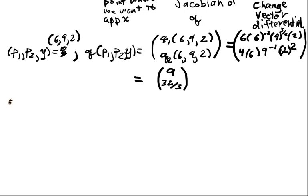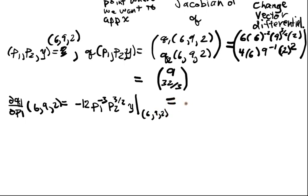Let's start with DQ1/DP1 of 6, 9, 2. When we differentiate with respect to P1, we'll have -12P1^(-3) P2^(3/2) Y, and we want to evaluate at the point 6, 9, 2. When we evaluate that, we're going to get -12 times ultimately 27. Lots of nasty numbers in here. 36 times 6 times 2, which should equal -3.